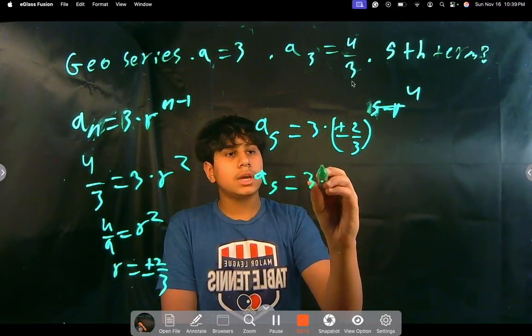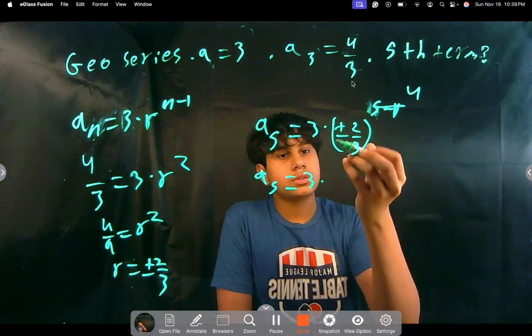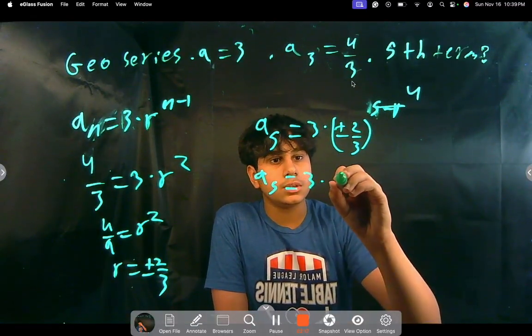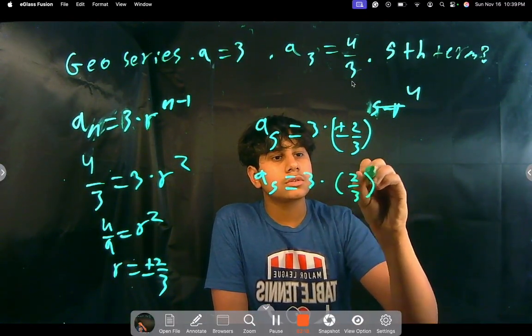So a of 5 equals 3 times, we can assume anyone for now, so I'll just take 2 thirds just for it to be easier. 2 thirds to the 4th power, right?